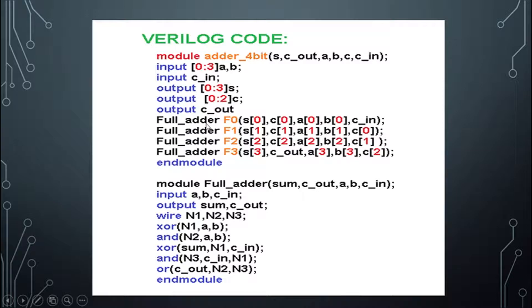Now we instantiate the adders. For the first full adder, the outputs will be S0 (first sum bit) and C0 (first carry bit), with inputs A0, B0 (first bits of A and B), and C_in as the first carry input. For the second full adder, instance name F1, the outputs are S1 and C1 (second bits of S and C), with inputs A1 and B1.